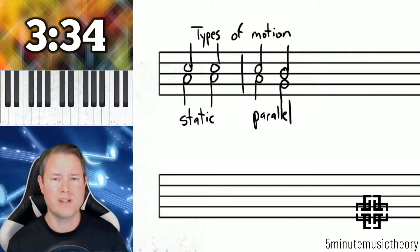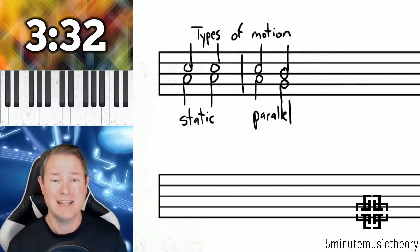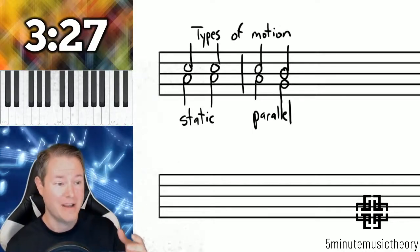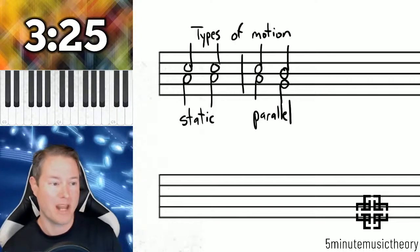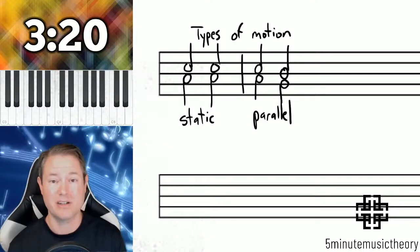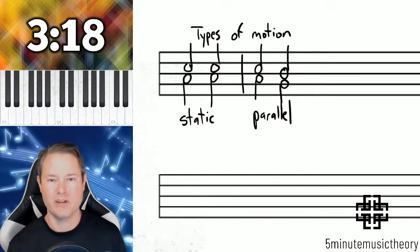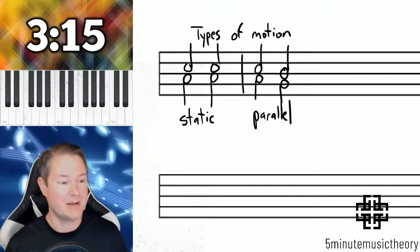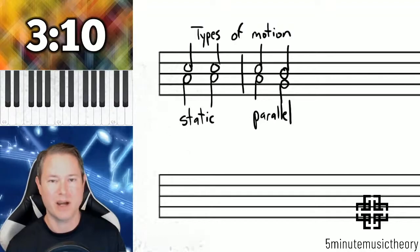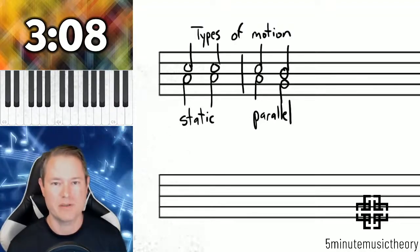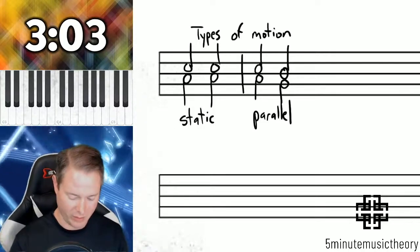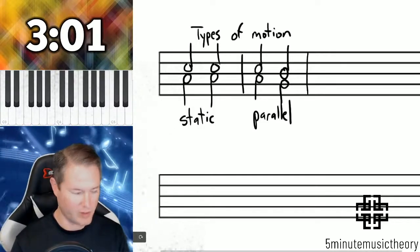Parallel motion is when two voices move the same direction in the same distance, and I'm talking about generic distance, the distance on the staff, because you might notice here that we have a minor third from A to C moving to a major third from G to B, but it's still considered parallel because of how far they're moving on the staff. Now static is sometimes confused with parallel because we could see those parallel lines that are created by that static placement of those notes, but static is not parallel, and that's very important to note when we get into forbidden parallels, which we will get to soon.